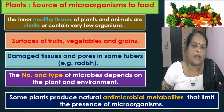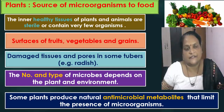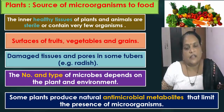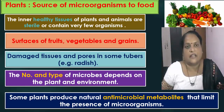Now we will see plants as a source of microorganisms to the food. The inner healthy tissues of plants are sterile and contain very few organisms. Microorganisms are present on the surface of fruits, vegetables and grains. The number of microorganisms is more in the damaged tissues and in the pores of some tubers, for example radish. The number and type of microorganisms depends on the plant and environment. Some plants produce natural antimicrobial metabolites, and these limit the presence of microorganisms in that particular food.